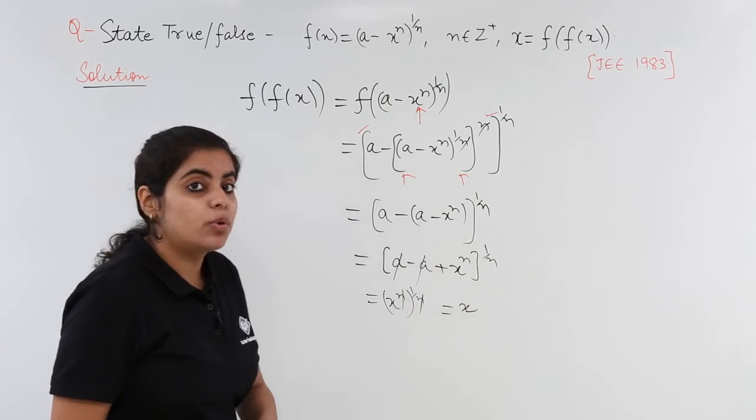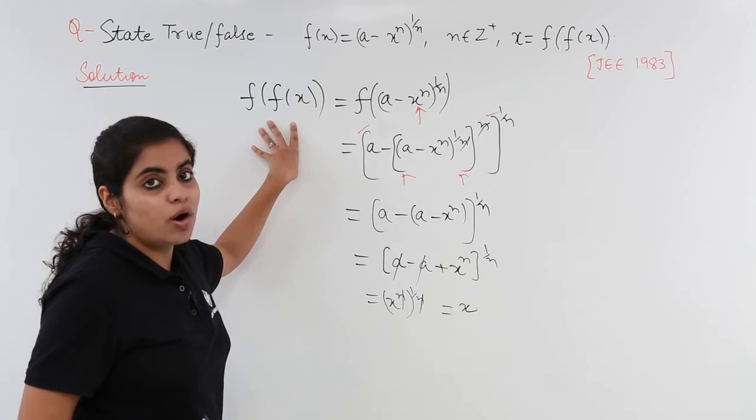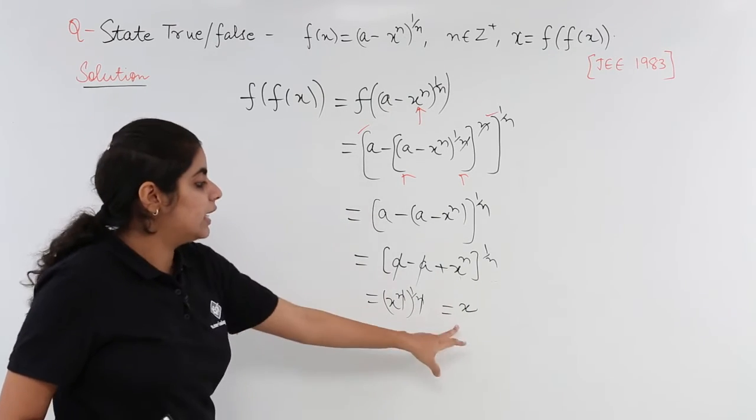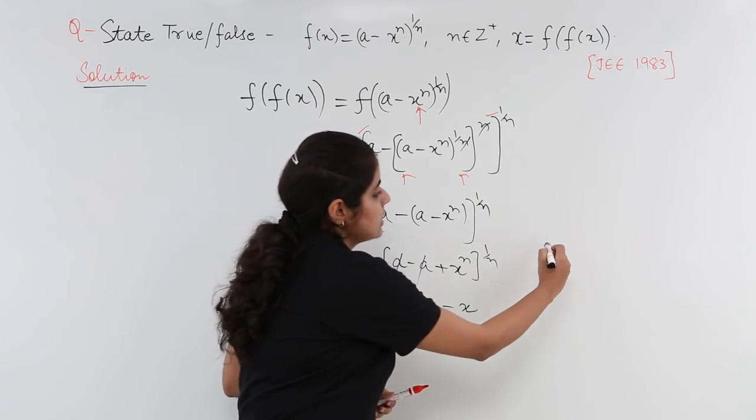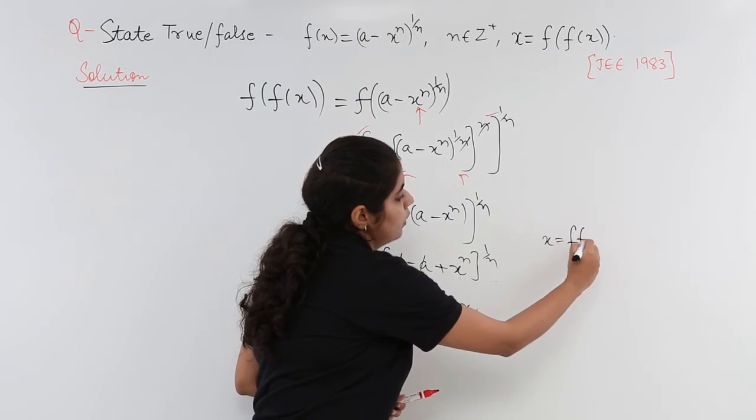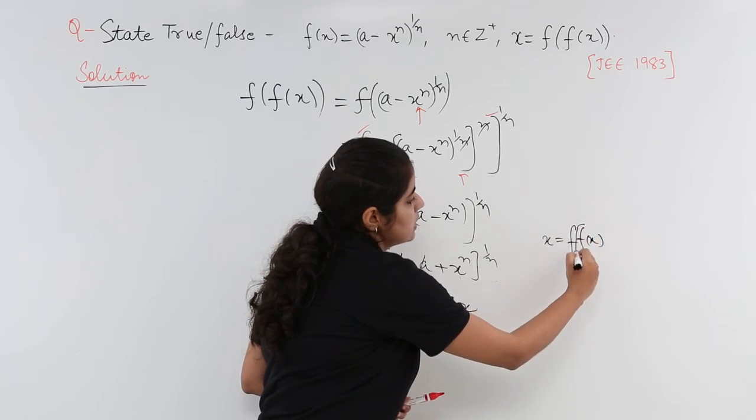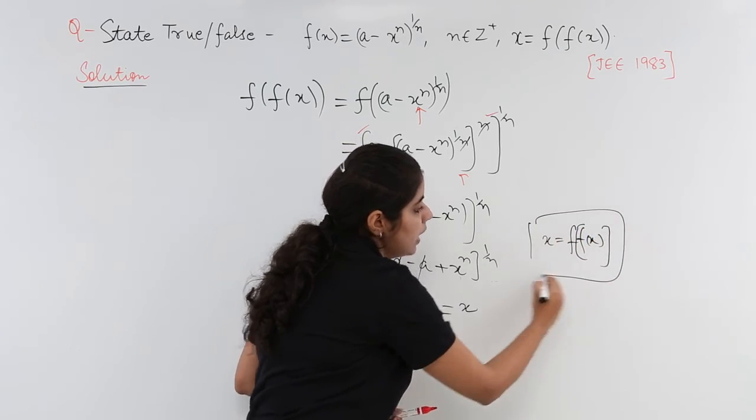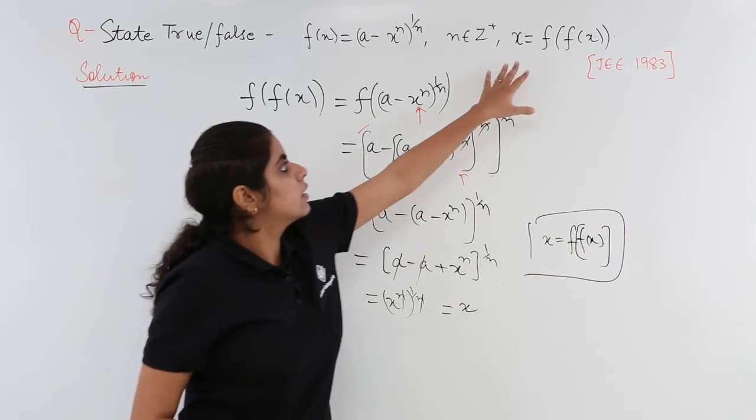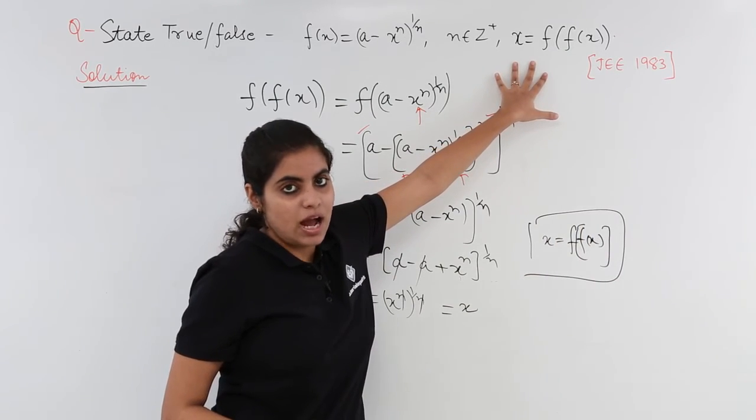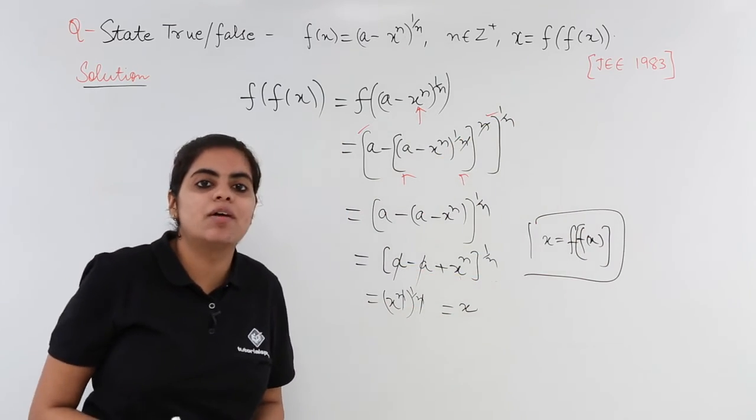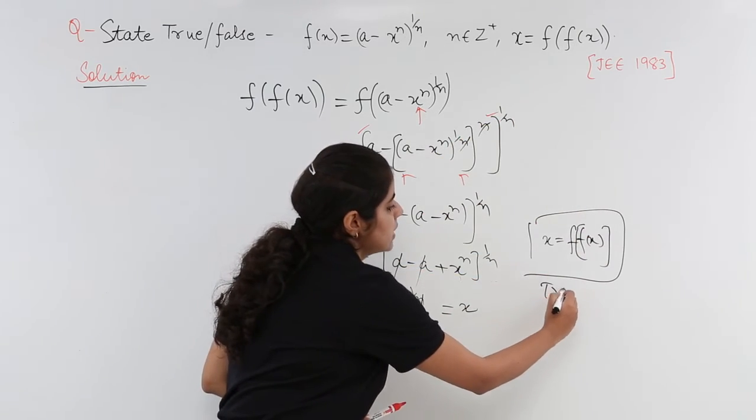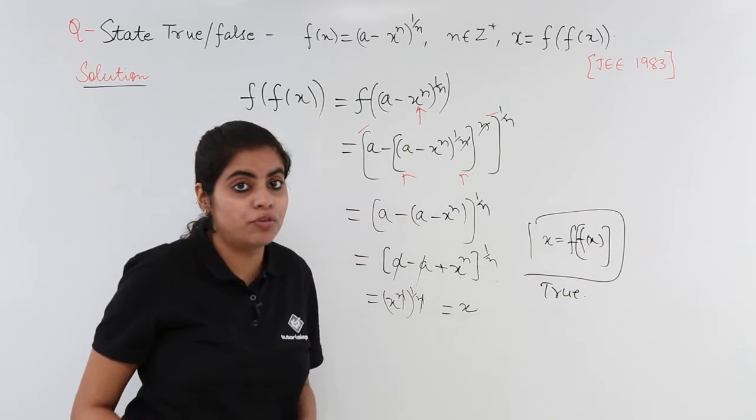We started with f(f(x)). We get x. That means x is equal to f(f(x)). And x is equal to f(f(x)) means this is what was asked to find and we found it. That means we have obtained the answer as true and not false.